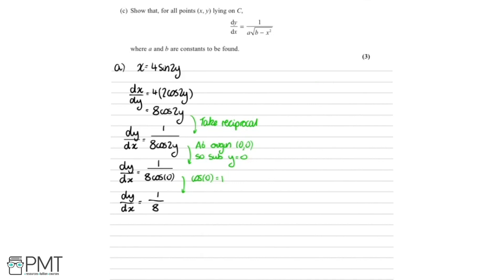We get one mark for differentiating x equals 4 sine 2y and then taking the reciprocal to get dy by dx. We get the second mark for recognising that the origin is (0, 0), substituting that in, and getting dy by dx equals 1 over 8.